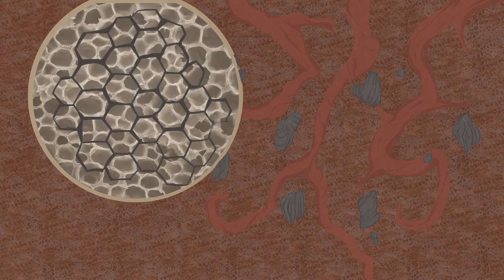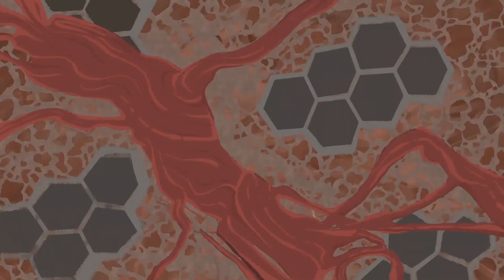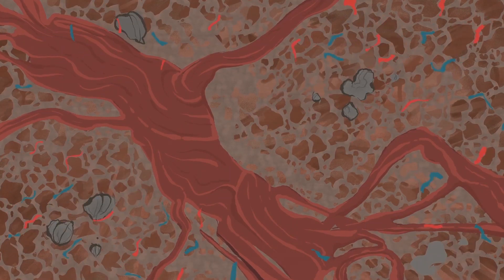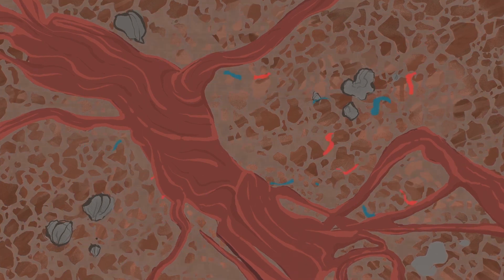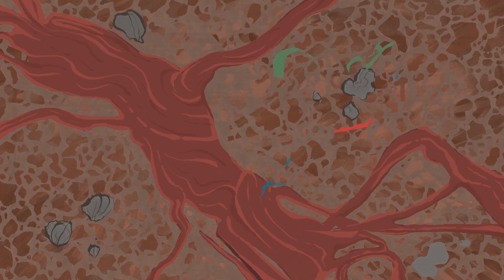Biochar's microscopic honeycomb structure improves the aeration, water-holding capacity, and nutrient retention of soil, and stops it getting compacted, meaning all the essentials that plant roots need are readily available and easily accessible.